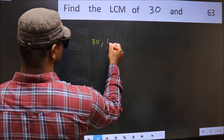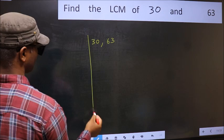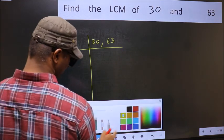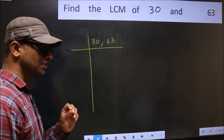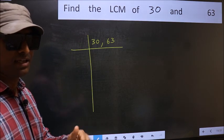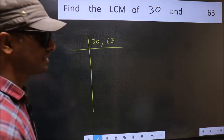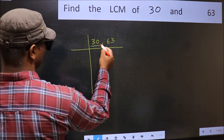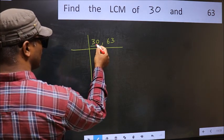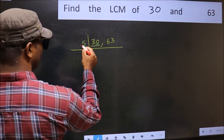30, 63. This is your step 1. Now you should focus on the first number, which is 30 here. In this number, last digit is 0, so take 5.